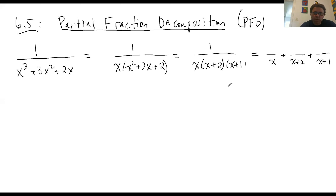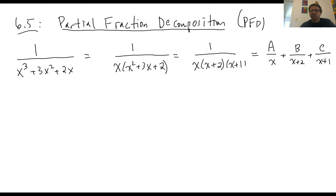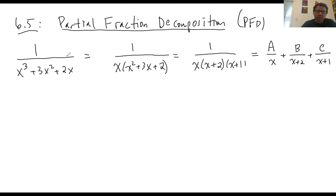We could guess and check, but with three factors it's going to get difficult, so we put in placeholders. If the denominator factor has degree 1, the numerator is just a number. So A goes over x, B over x + 2, and C over x + 1. At least on the test, if I ask for the form of the partial fraction, you just work to this point and stop — because after that you have to multiply everything out, get a common denominator, and find A, B, and C. I'd rather you spend more time on integral techniques than get bogged down in algebra where it's easy to make a mistake.